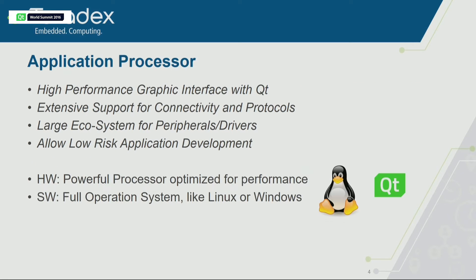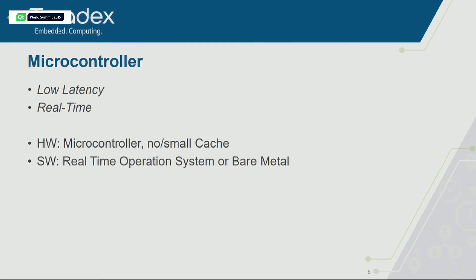If you look at the first part of those requirements, they fit well for an application processor — a very strong processor like what's in your cell phone. You can do all of that from the software side with a full operating system like Linux or Windows. There's a big ecosystem and a lot of tools available, so that's a good fit for the first set of requirements. However, low latency and real-time is a little harder with this kind of system.